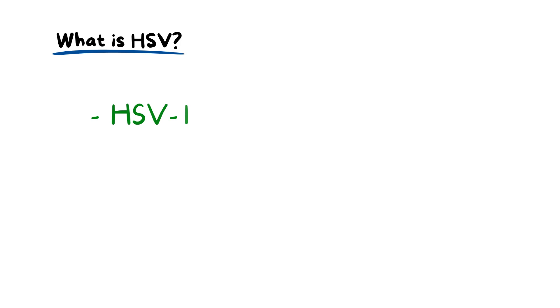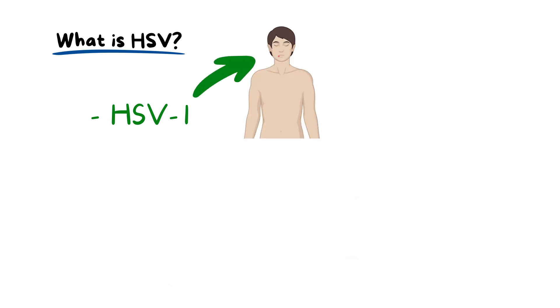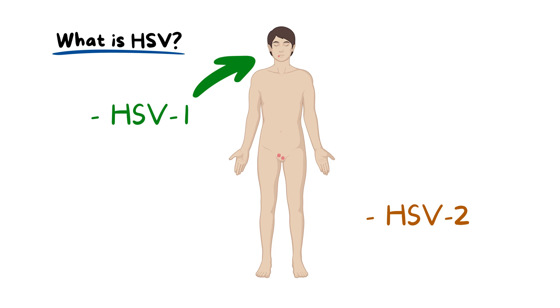HSV-1 is particularly relevant to the oral cavity. It's responsible for those pesky cold sores that appear around the mouth and the lips. On the other hand, HSV-2 is often associated with genital herpes.